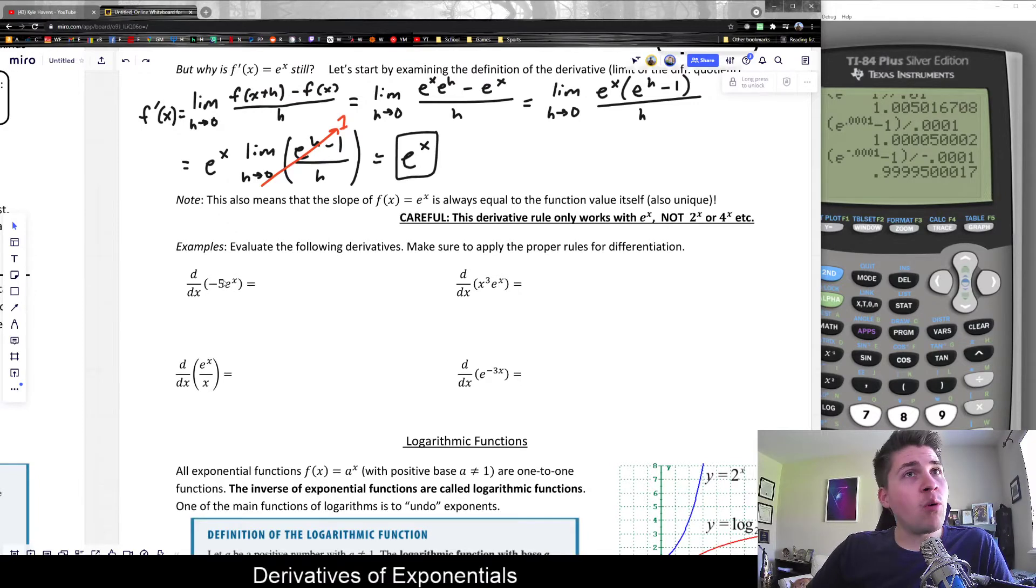And so again, the coefficient rule applies to not just polynomials, but all functions. So basically, we have negative 5 times e to the x. Well, that negative 5 could be passed through the derivative. It will not affect it.